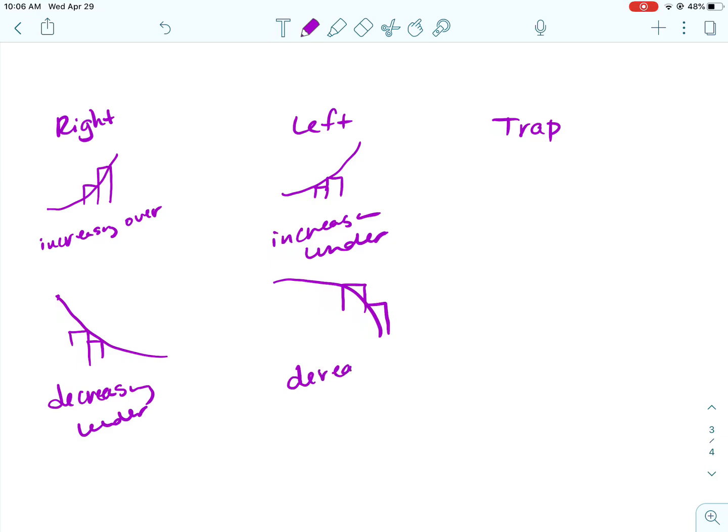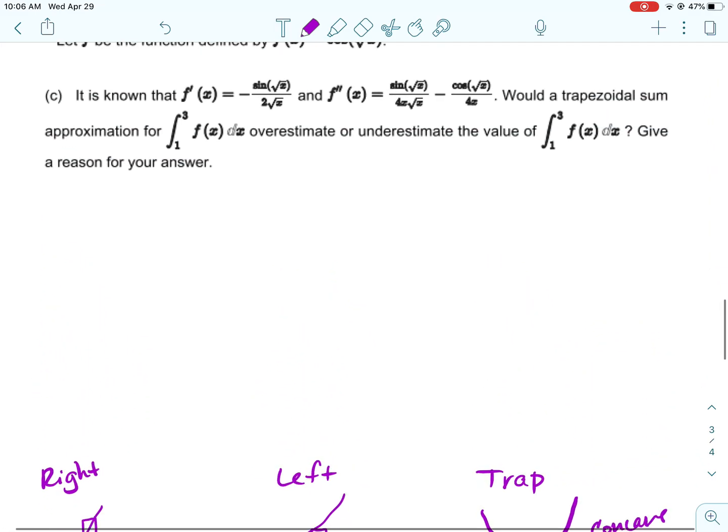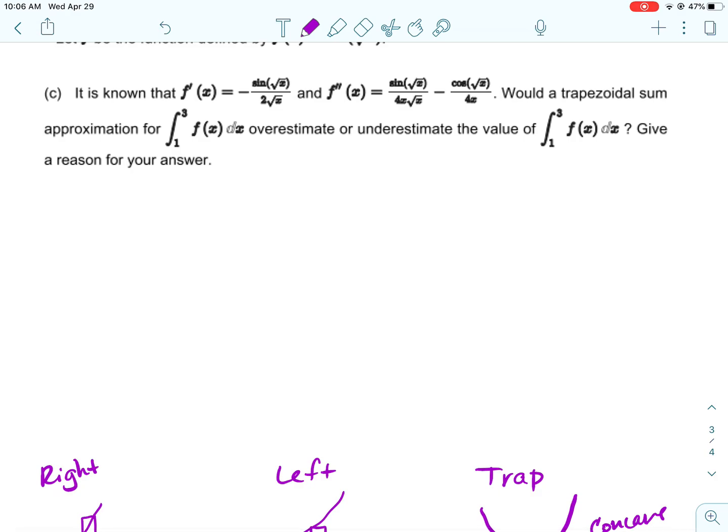And then for left Riemann sums, if we have increasing, the left touches. That's going to be under. And then I've been doing concave up on all of these. It doesn't matter if we're left and right. So we could do concave down. And then left is touching. That's going to be over. And then for trapezoid, the only thing that matters is concavity. So if we have concavity up, increasing or decreasing, and we're going to do a trapezoidal approximation, concave up is over and concave down is under.